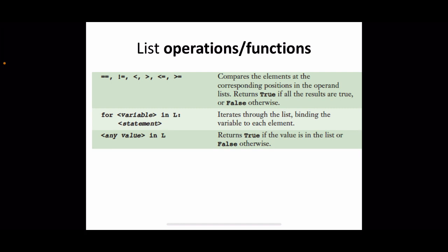We can also apply comparison operators on lists: double equal, not equal, less than, greater than, etc. These compare the elements at the corresponding positions in the two lists. Two lists are said to be equal if every element at every corresponding position is the same, returning true; otherwise it returns false. The same principle applies to all other comparison operators.